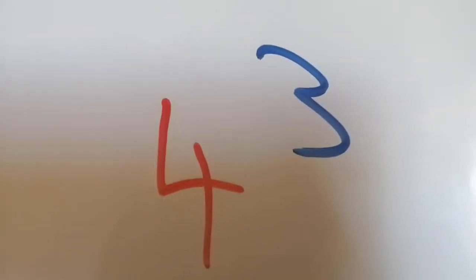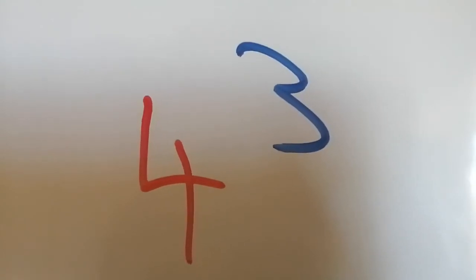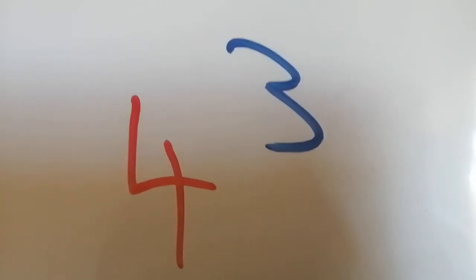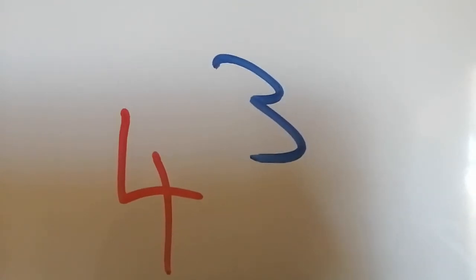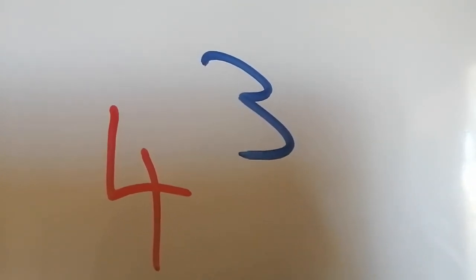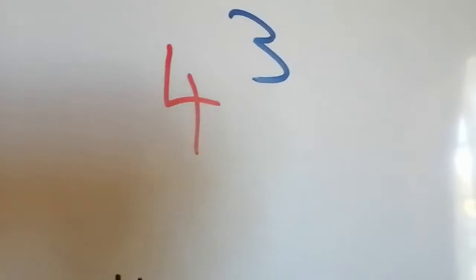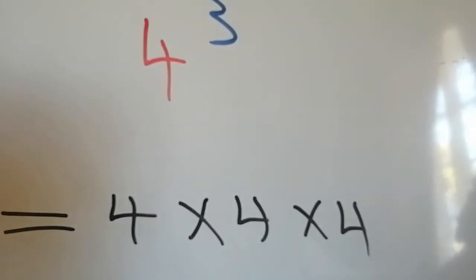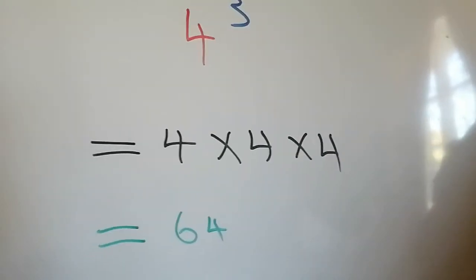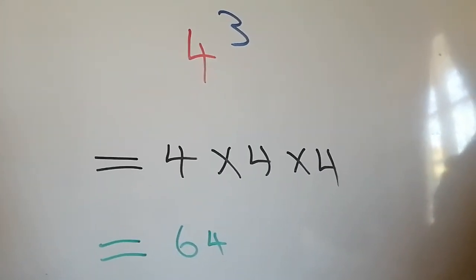In this instance we have 4 to the power 3, 4 being our base number or our root number and the 3 our exponent which tells us that 4 needs to be multiplied by itself three times. We will write it as 4 times 4 times 4 and our answer there will be 64.